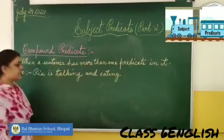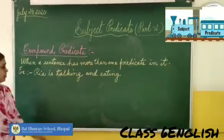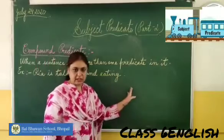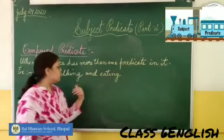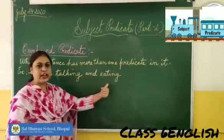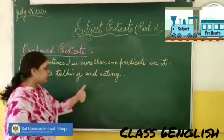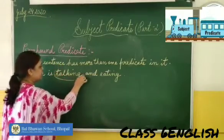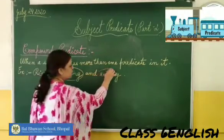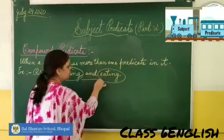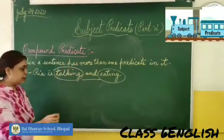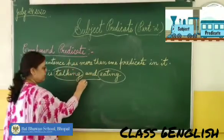The first example is: 'She is talking and eating.' The predicate here is 'is talking and eating.' Can you see there are two predicates — two words: 'talking' and 'eating.' So this sentence has a compound predicate.